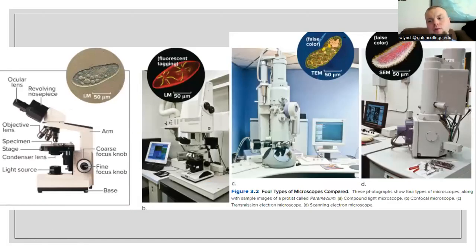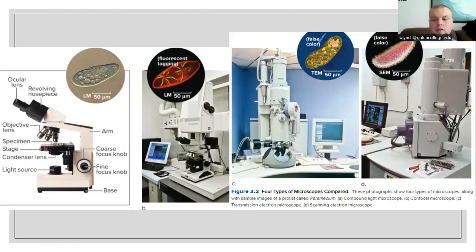So what kinds of microscopes do we have to analyze cells? We have the standard light microscope, which is called the compound light microscope. Our magnification is going to range anywhere from 100 times to 4,000 times potentially, depending on what kind of light microscope you have and how far down you can get.